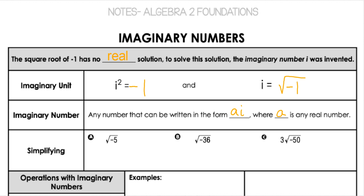Here's how we use it. When we have the square root of a negative number, we can split it apart into the square root of negative 1 times the number. That means we have i, because the square root of negative 1 is i, and then we still have the square root of 5. So it removes the negative from under the root, and then we can simplify the root like normal.